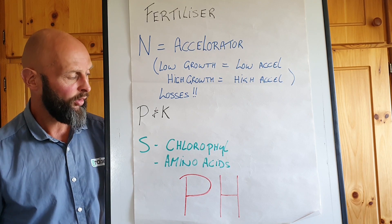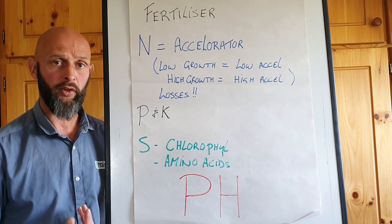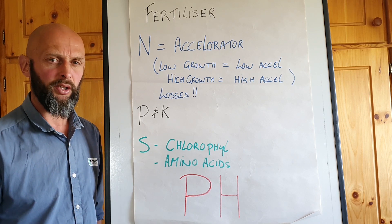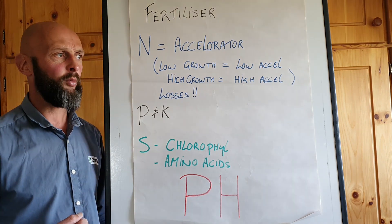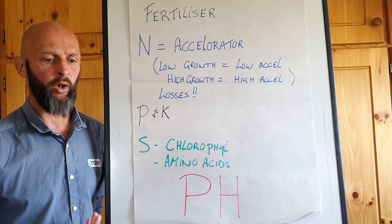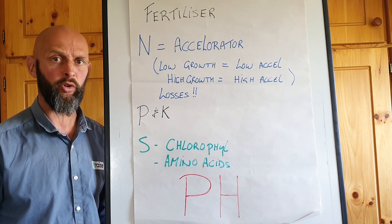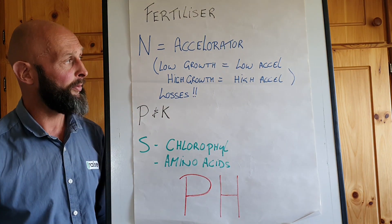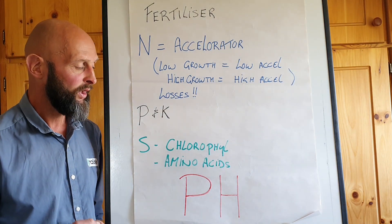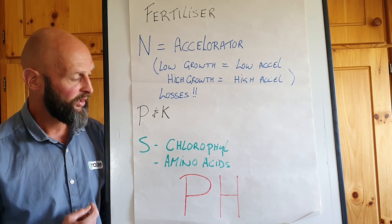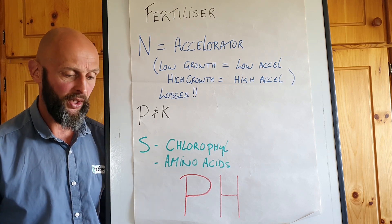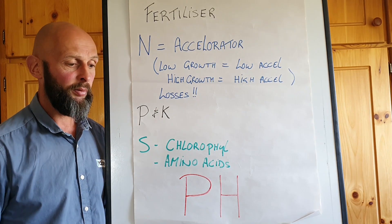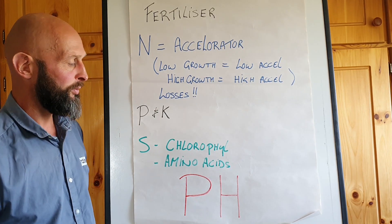Another forgotten element is sulfur. Sulfur is a massive driver of chlorophyll - that green color in the plant - and so when you see the yellowing quite often it's a lack of sulfur, especially following a wet winter like we've had. The sulfate sulfur is probably being stripped out of the soil more than usual. Sulfur is highly necessary in the mobilization of nitrogen as well to turn into plant growth, and it plays a massive role in the production of amino acid in the plant, so the right proteins are driven by sulfur.